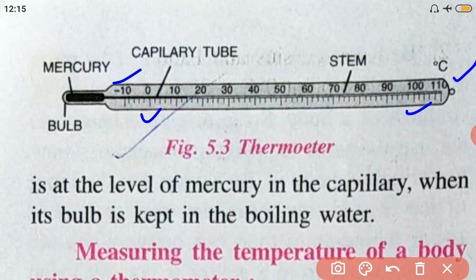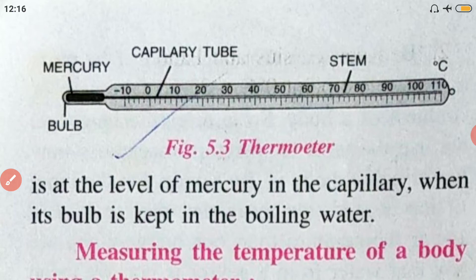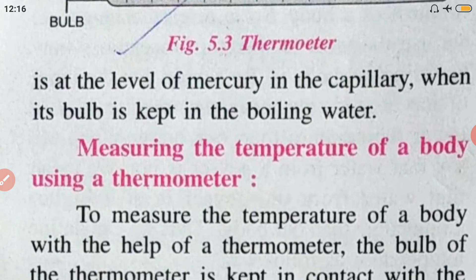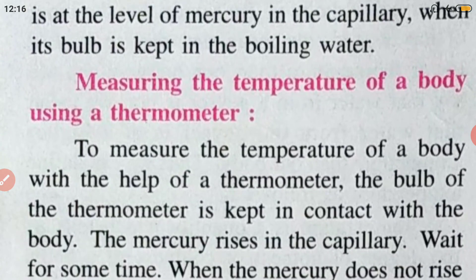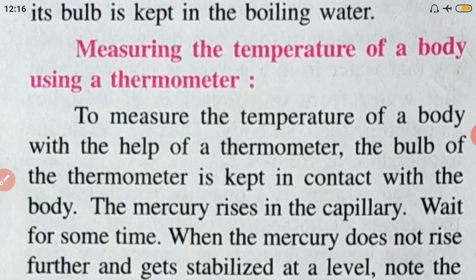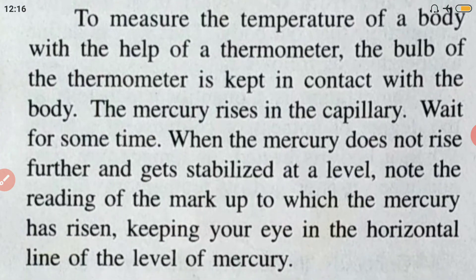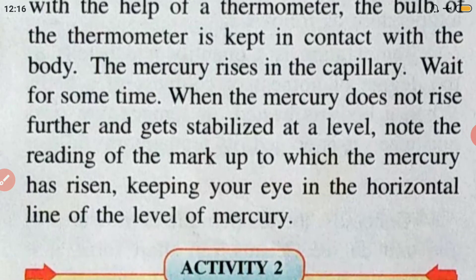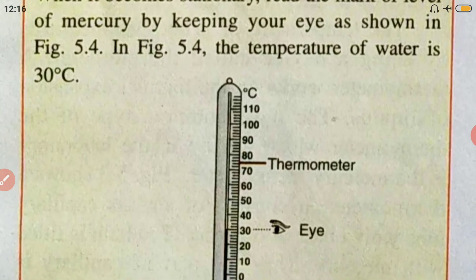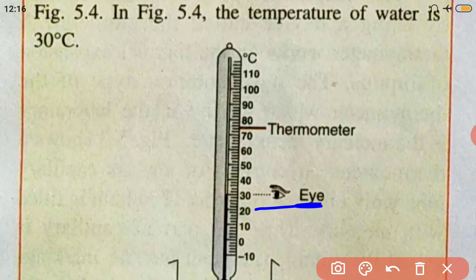This is a normal lab thermometer, not a clinical thermometer. To measure the temperature of a body, the bulb of the thermometer is kept in contact with the body. The mercury rises in the capillary — wait for some time. When the mercury does not rise further and gets stabilized at a level, note the reading of the mark up to which the mercury has risen, keeping your eye in the horizontal line at the level of mercury.